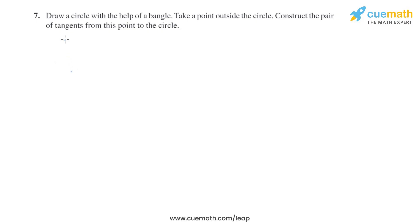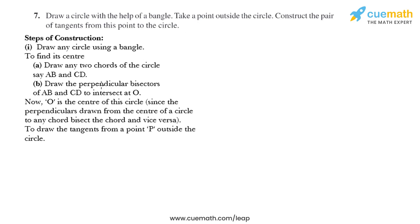Question 7 of this exercise says draw a circle with the help of a bangle, take a point outside the circle, construct the pair of tangents from this point to the circle. So let's start with the steps of construction.